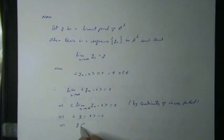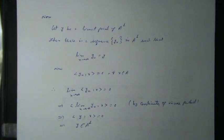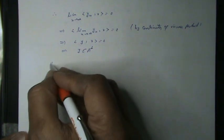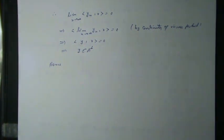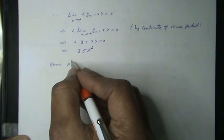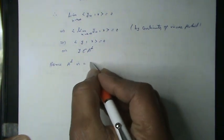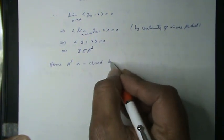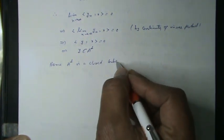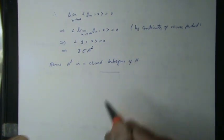This implies y belongs to A⊥. Therefore A⊥ is a closed subspace of Hilbert space H. Hence the proof.